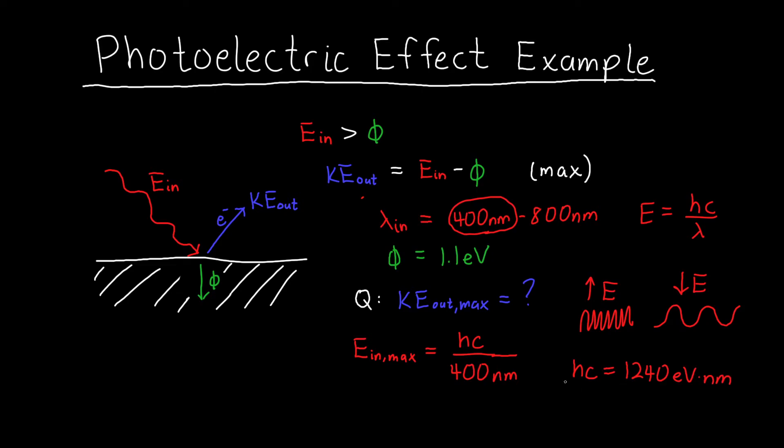So anytime I see hc, I treat it as its own sort of lumped physical constant, rather than plugging in Planck's constant and the speed of light, which very often leads to errors. So if we put on the top 1240 eV·nm, we see that the nanometers cancel and we're left with eV. And this happens to be 3.1 eV. So we know our maximum input energy.